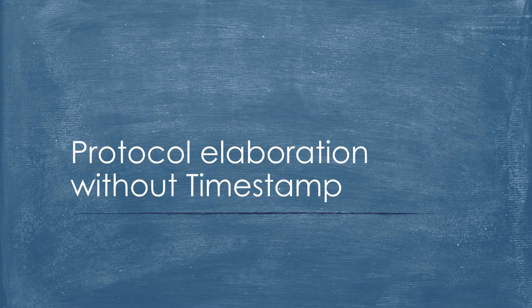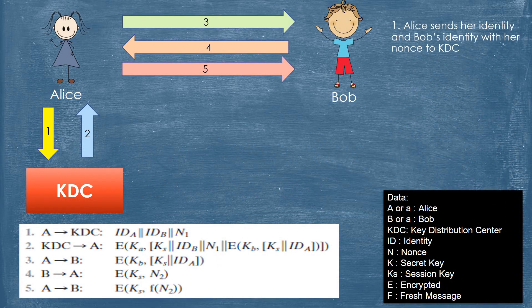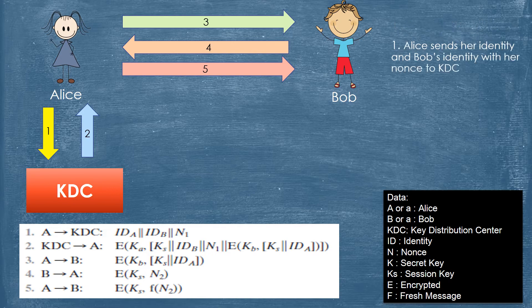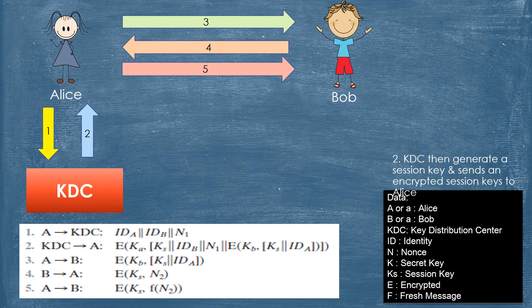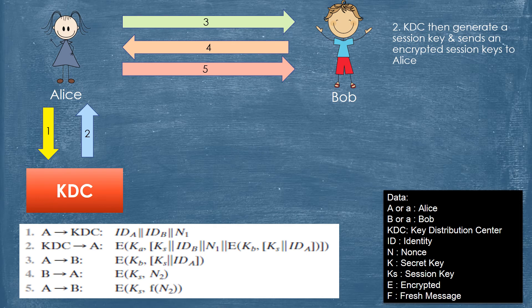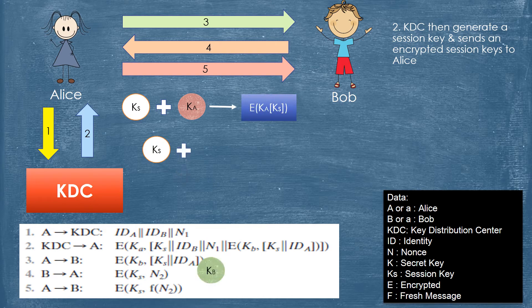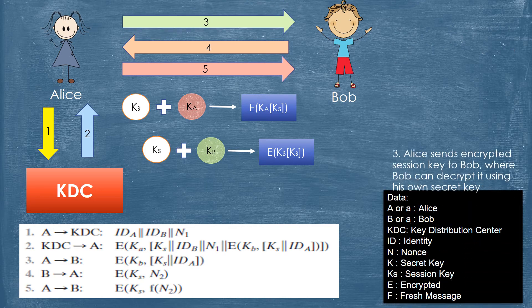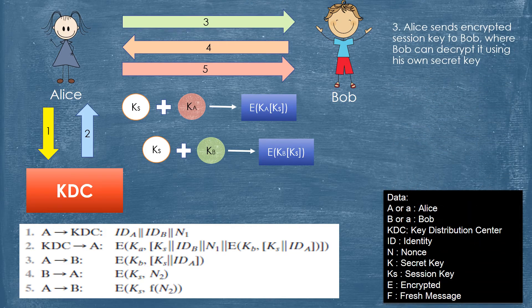Explanation of Needham-Schroeder using KDC without timestamp. Step 1: Alice sends her identity and Bob's identity with her nonce to KDC. Step 2: KDC then generates a session key and sends encrypted session keys to Alice. For encryption of the session key, KDC generates the session key and encrypts it with Alice's secret key. This process also does the same for Bob's secret key.